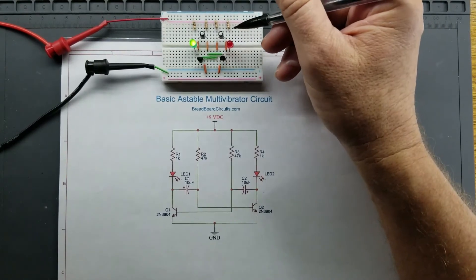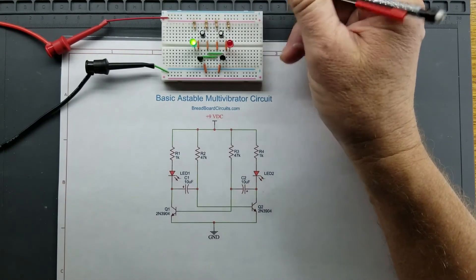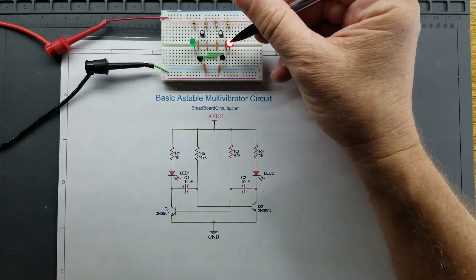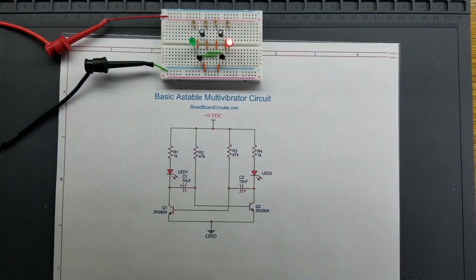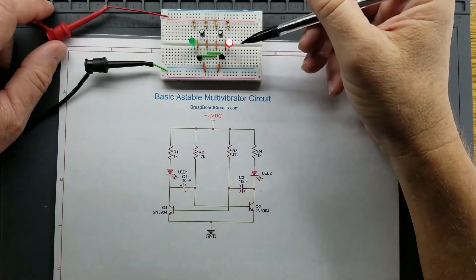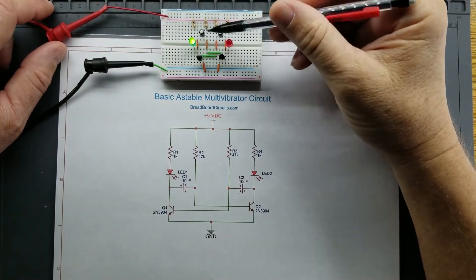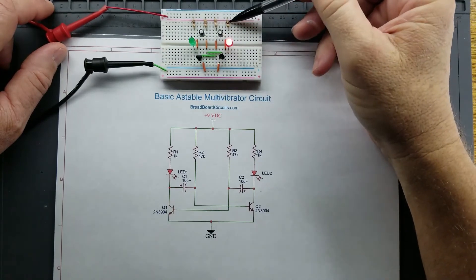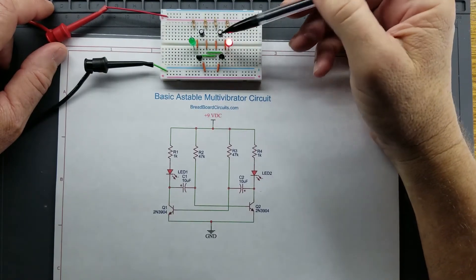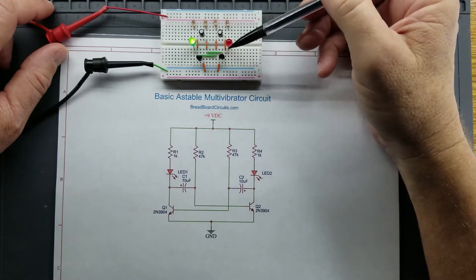Both of those other circuits that I'm comparing this astable multivibrator circuit to, you can see in another video. This is something you could easily build with 10 components. I've got a couple of general purpose transistors here, the two N3904s, four resistors, a couple of electrolytic capacitors, and some basic LEDs.